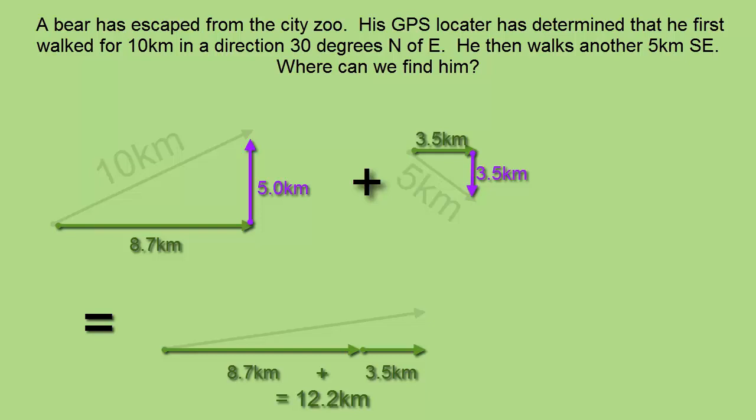Similarly, we can do the same thing with our two vertical components, the two purple lines. Adding the 5 kilometer vector tip to tail to the 3.5 kilometer vector gives us an overall vertical displacement of 1.5 kilometers towards the north. So we've already simplified our diagram a great deal.